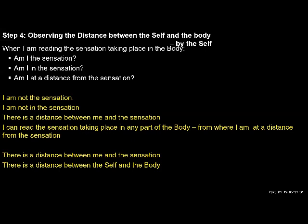In exercise two, step one, we were observing that I am there and the body is there — these are two distinct entities, two distinct realities. I know that I am there because I can see the activities going on within me. I can find out that the body is there through the various sensations that I read from the body. In step two, we were trying to see this interaction between the self and the body, that this interaction between the two is only in the form of information.